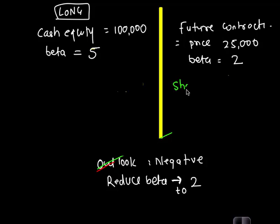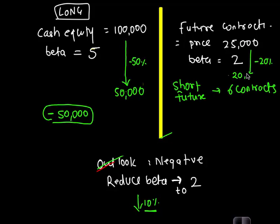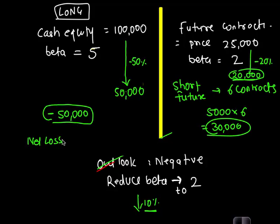In this case you decide to take short futures 6 contracts. Now let us say that markets actually fall by 10%. If markets fall by 10% then your equity position will fall by 50%. So value of your position is 50,000. Your loss is 50,000. But if markets fall by 10% then futures will fall by 20%. The value of futures now is 20,000. Your profit per future is 5,000. So 5,000 × 6 contracts, your total profit is 30,000. Your net loss is 20,000.